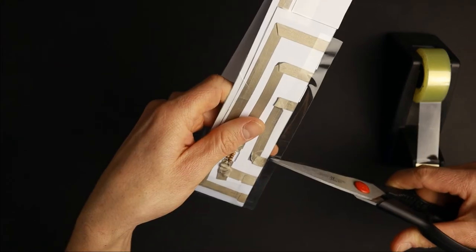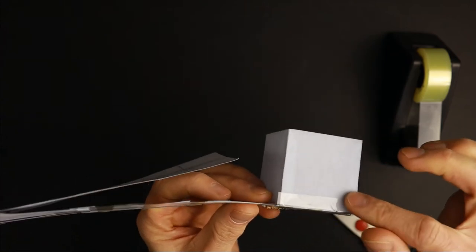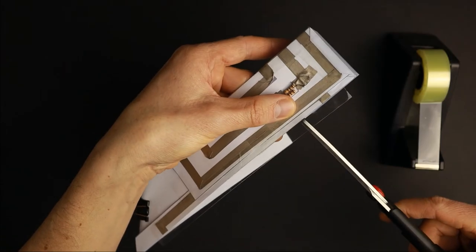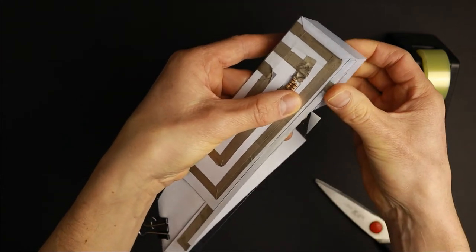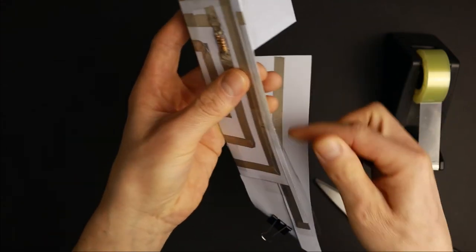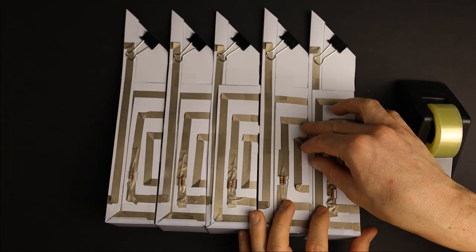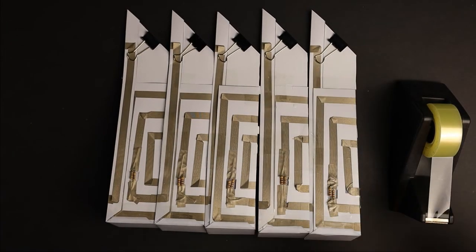To join the cubes together, it is good practice to insulate the conductive tape at the edges with some transparent tape because the edges will touch each other later. Attach all cubes with some transparent tape.